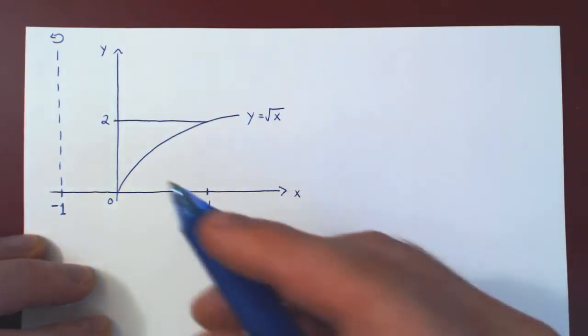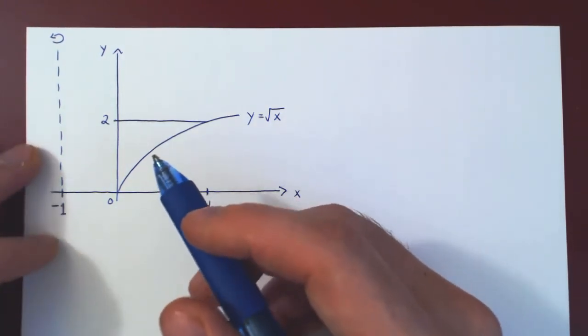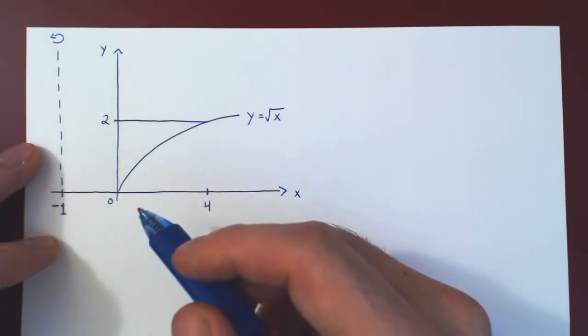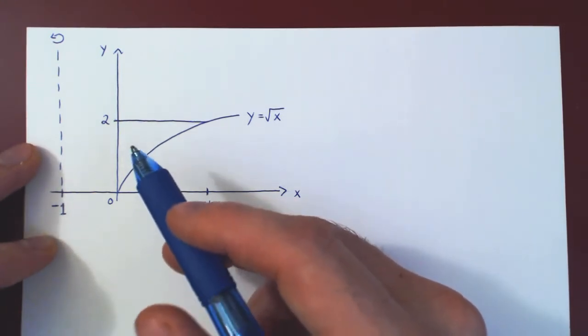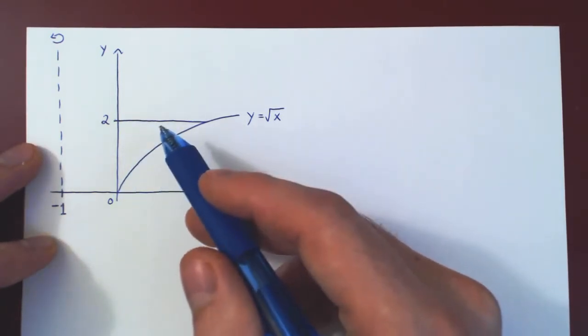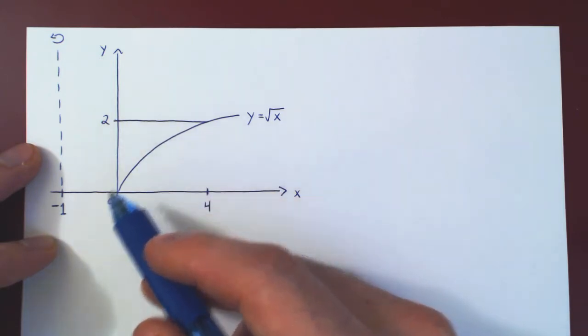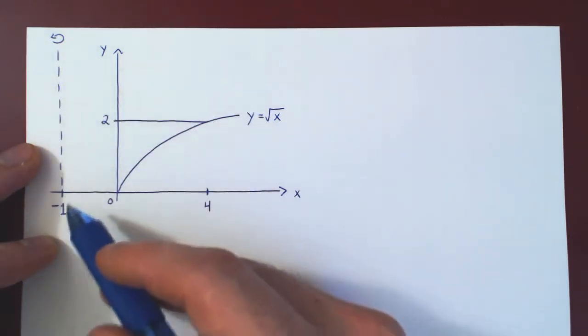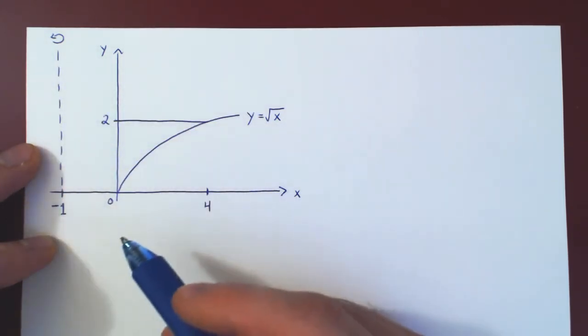In this video, we will find the volume of the solid of revolution obtained by revolving this region about the vertical line x equals negative 1.